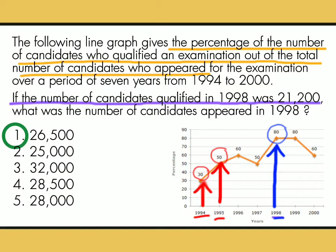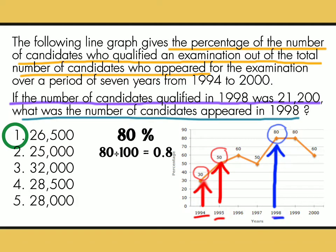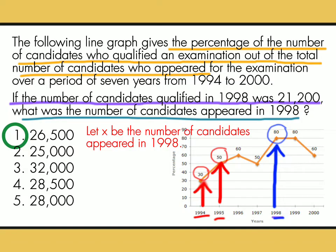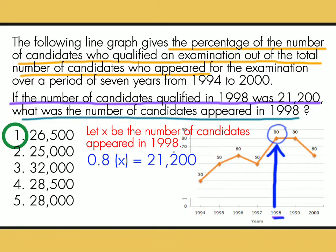But the question is, what was the number of candidates appeared in 1998? First thing to do is convert 80% into decimal — divide it by 100, and that is equal to 0.8. The fastest way to convert is move the decimal point twice, and 0.8 din ang labas niyan. Let x be the number of candidates appeared in 1998. Ibig sabihin, itong 80% o 0.8 ng x na hinahanap natin ay equals to 21,200.